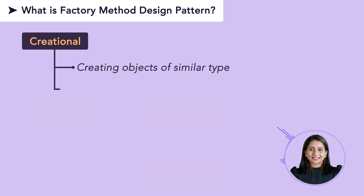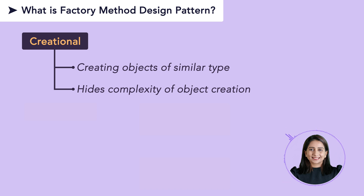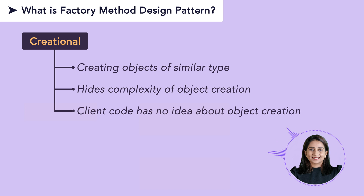The goal of factory method pattern is to hide that complexity while creating objects which are of similar type but can have different implementations. So the client code which is actually using the factory method pattern has no idea how those objects are created.